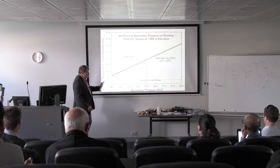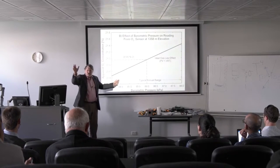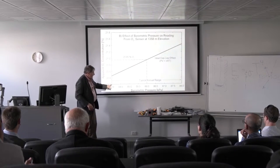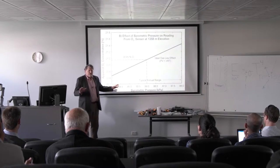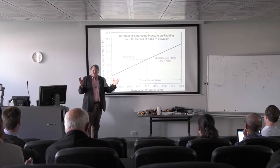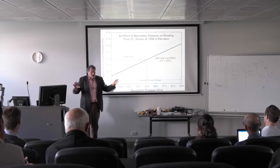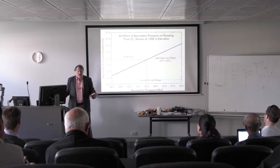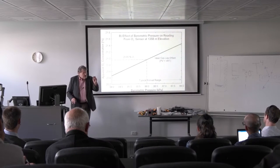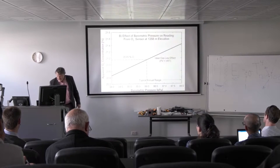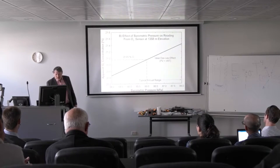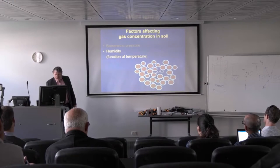Pressure doesn't change that much — high pressure fronts, low pressure fronts. Pressure from highs to lows only changes the density of air about one percent, maybe two percent in extreme events. So even though pressure has a huge effect on our weather, it only has a small effect on the density of gas. But we measure and correct for it.